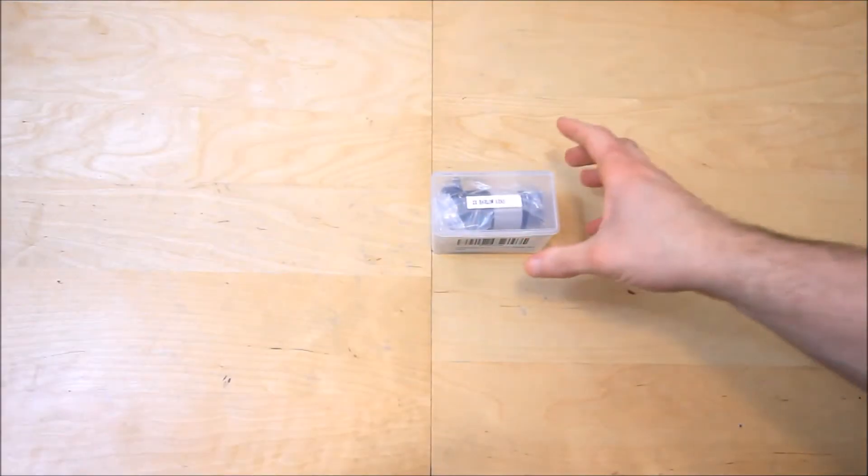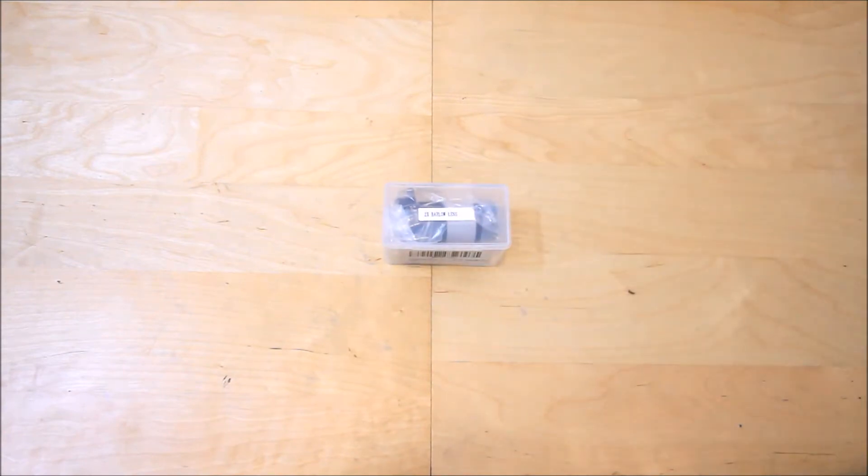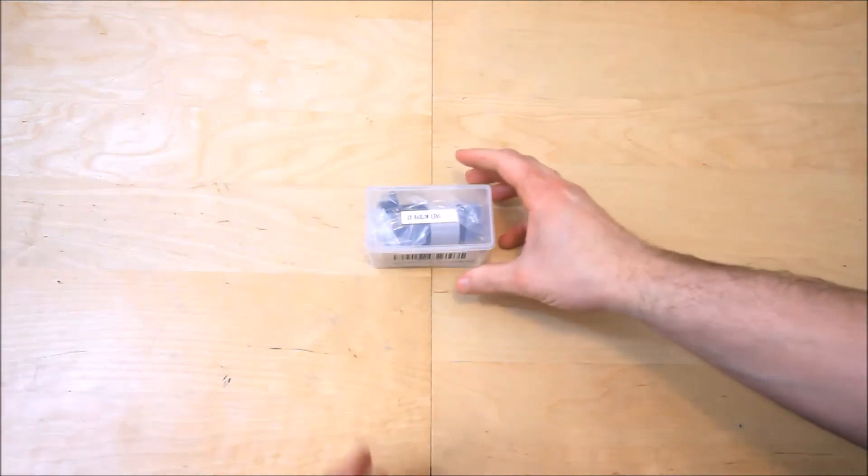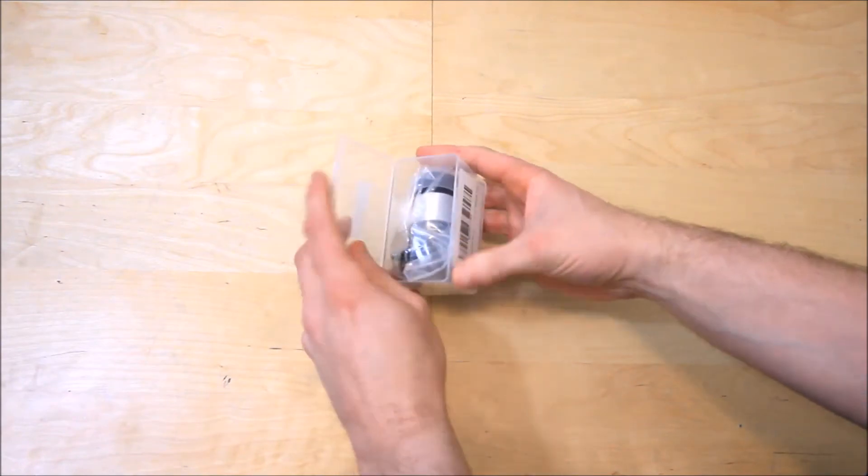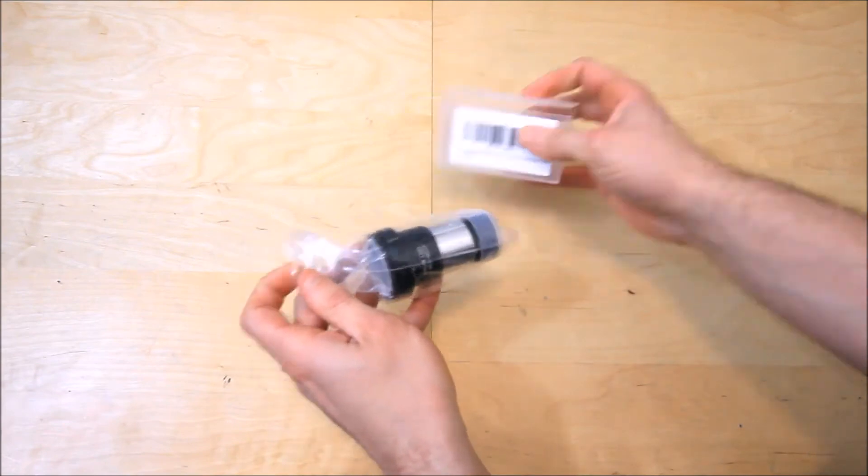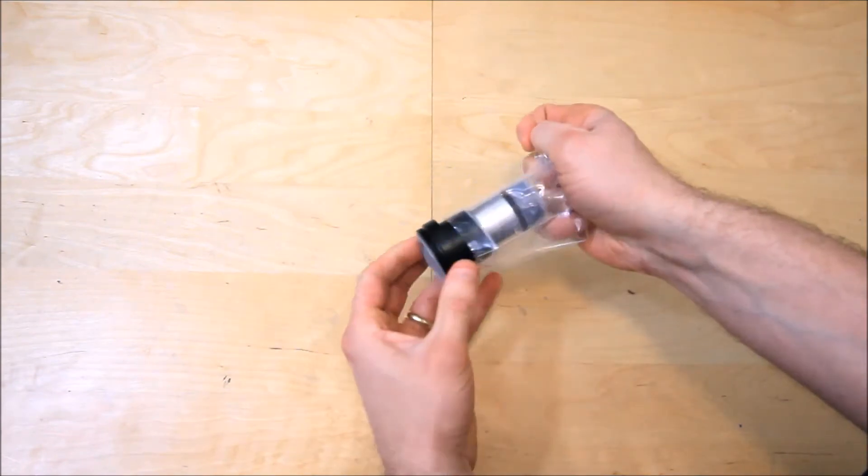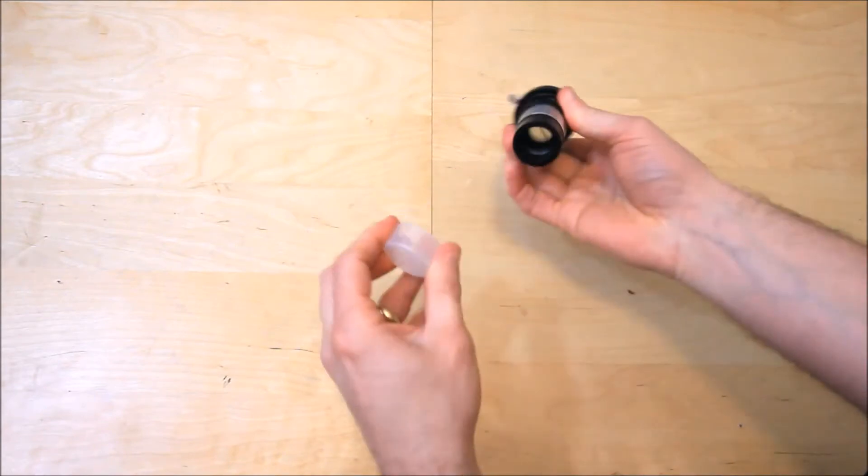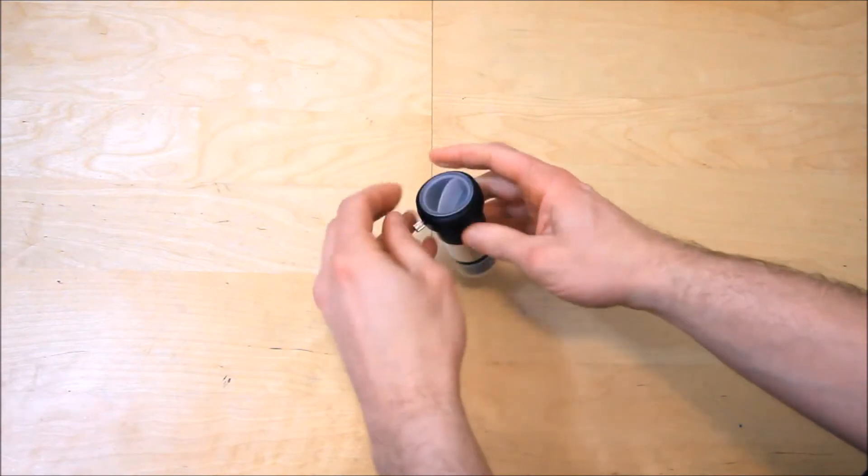Here is the Barlow lens that I've got from Solomark through Amazon. As you can see, £13.99. First good point already, it comes with a very good plastic box, well packaged, already got two dust caps on either side.